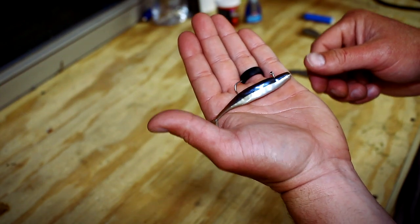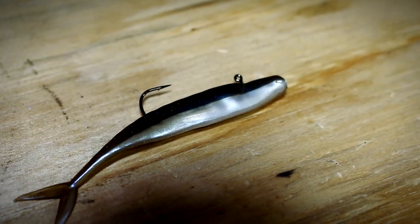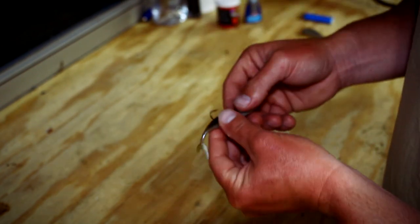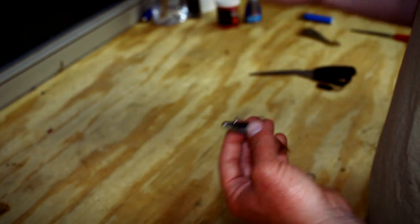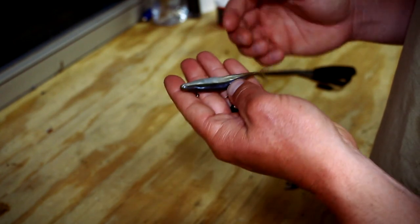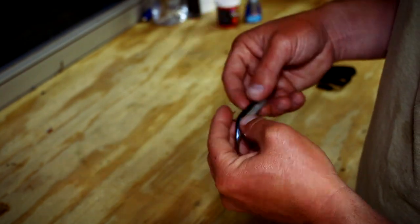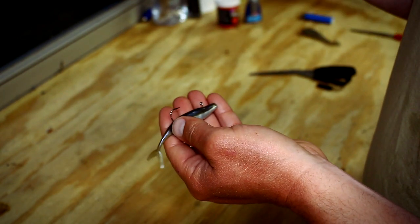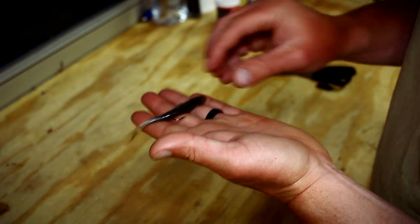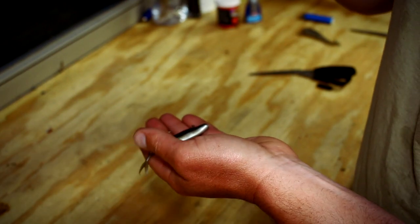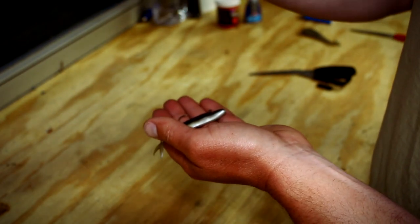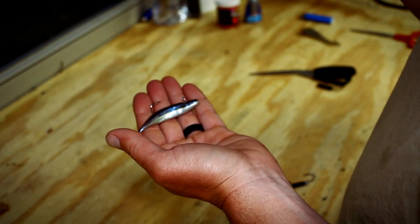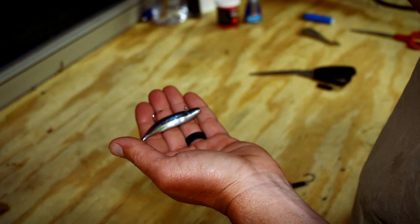Once you use this, you want to use light line obviously because you're throwing a real light weight. I prefer a seven foot medium spinning rod, eight pound leader to a 15 pound braid. All you're gonna do is just cast this out there, hold a semi slack line. You want a little bit of a bow in your line where you can still feel the bait but you want to have a free range of motion and let it hover and glide like it is designed to do.